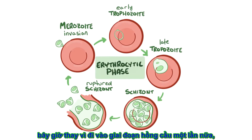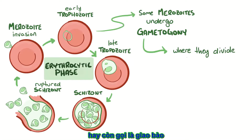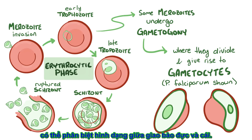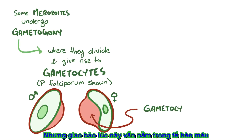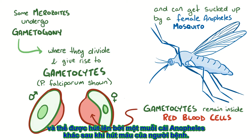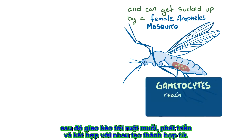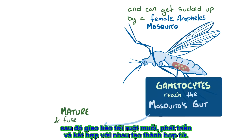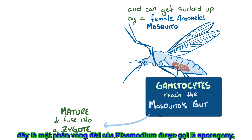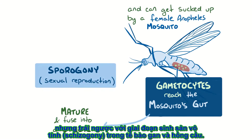Instead of going into the erythrocytic phase again, some of the merozoites undergo gametogony, which is where they divide and give rise to gametocytes — little sausage-shaped sexual forms that can be either male or female. These gametocytes remain inside of a red blood cell and can get sucked up by another female Anopheles mosquito that might take a blood meal from the infected person. The gametocytes can then reach the mosquito's gut, where they mature a bit more and then fuse together to form a zygote. This part of the plasmodium life cycle is called sporogony, and it's sexual reproduction, as opposed to schizogony, or asexual reproduction, that happened in the liver and red blood cells.